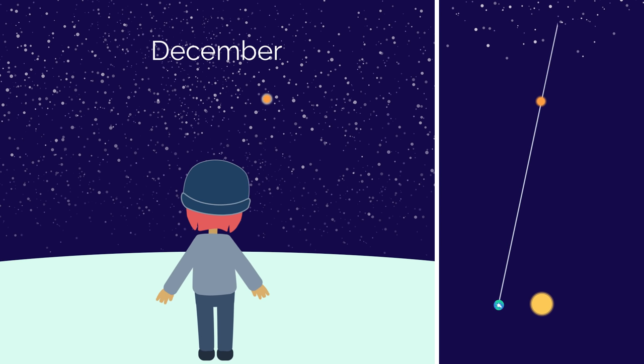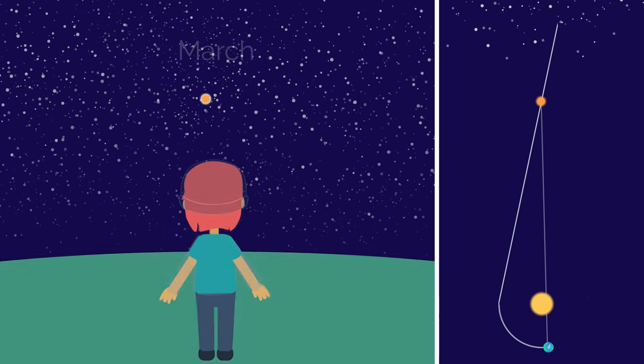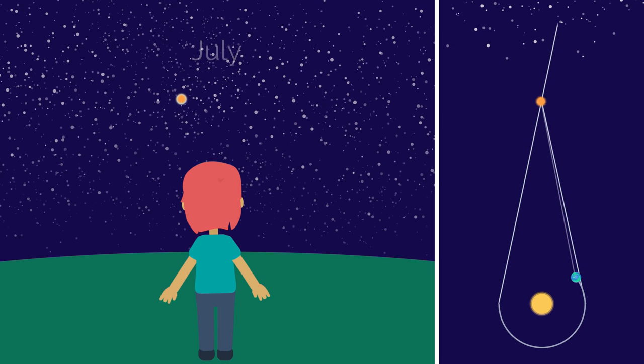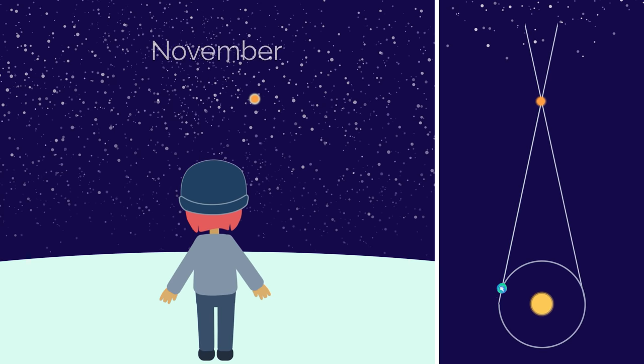Now, if we measure how much a star moves when the Earth does one complete trip around the Sun, we can use this to work out this angle, called the parallax angle.